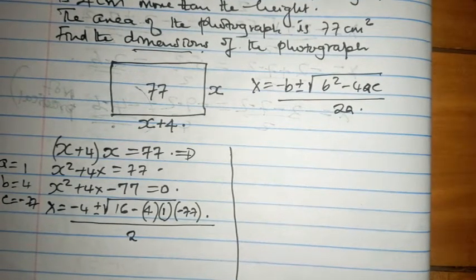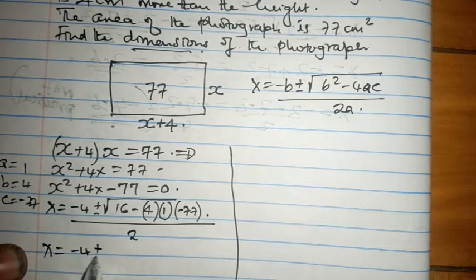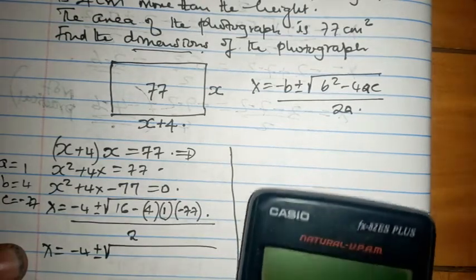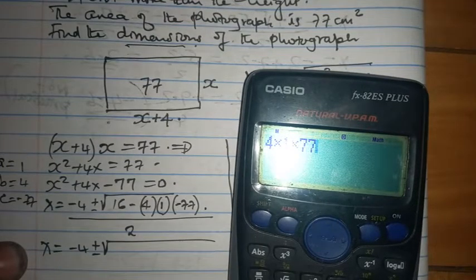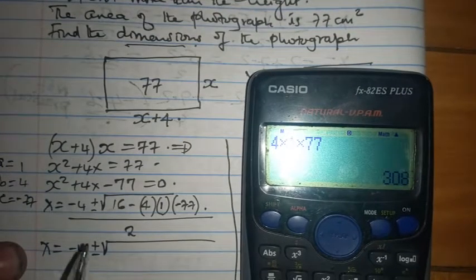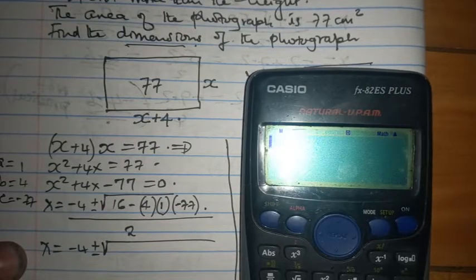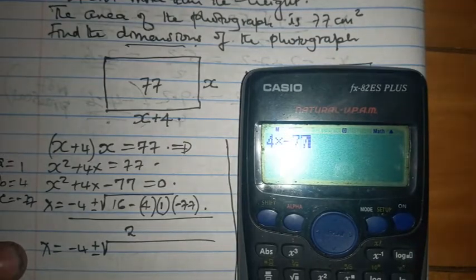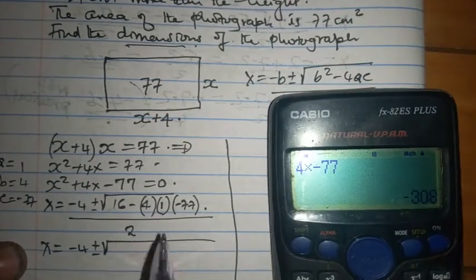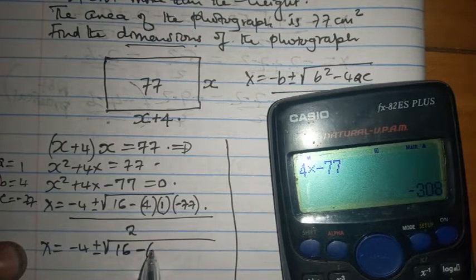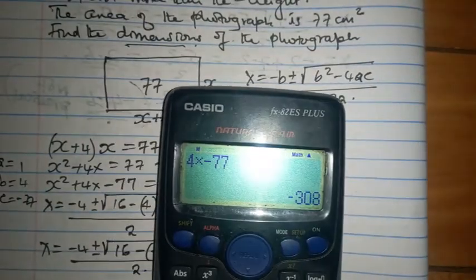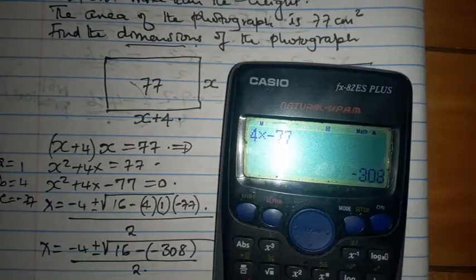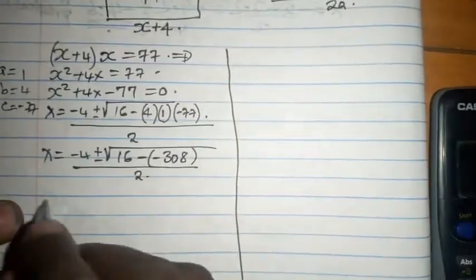From this, we have x equals minus 4 plus and minus square root of 16. Let us talk about 4 times 1 times 77. That gives us 308. So 16 minus negative 308, because 4 times minus 77 is negative 308. We have 16 plus 308 over 2a. When we talk about 16 minus negative 308, it is 16 plus 308. So we have x equals minus 4 plus...